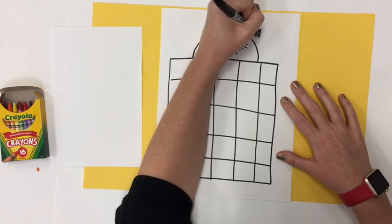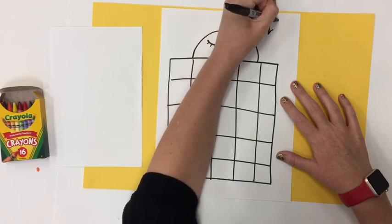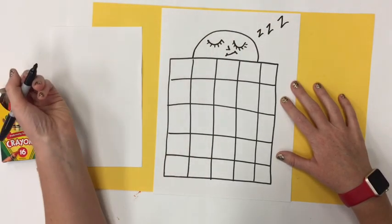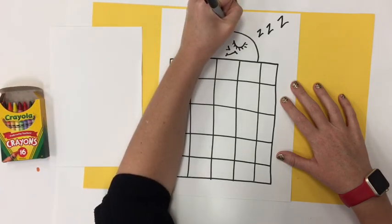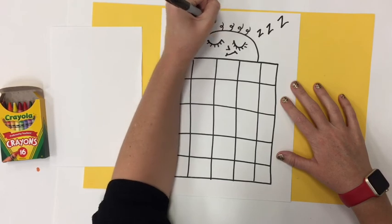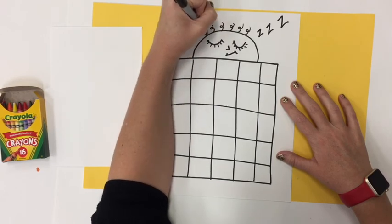Over on the side, I'm going to write the letter Z a couple times. When we have Z's coming out of us, that means we are sleeping. I'm going to give myself some curly hair coming off the top of my head.